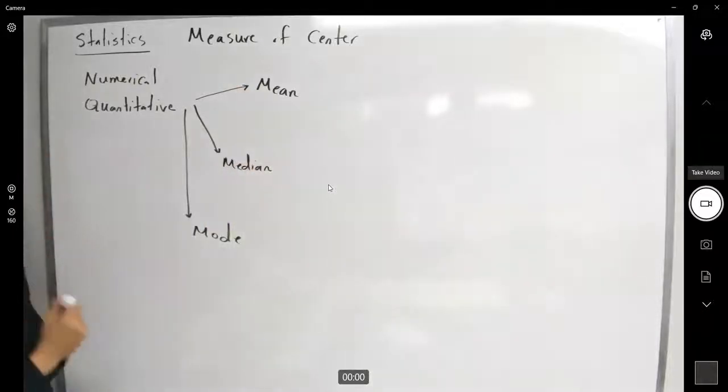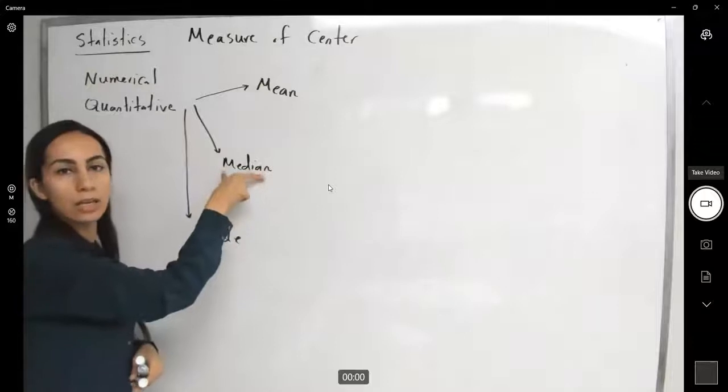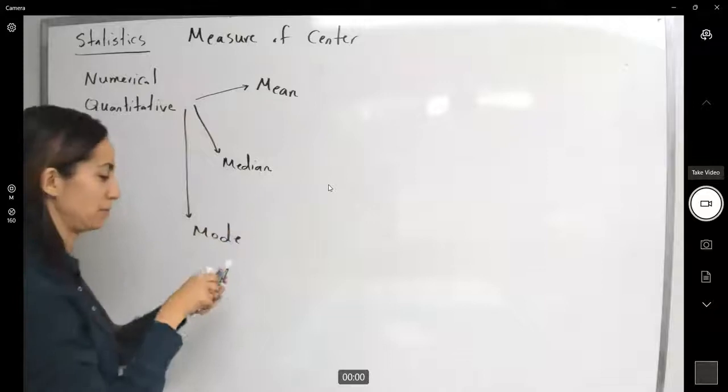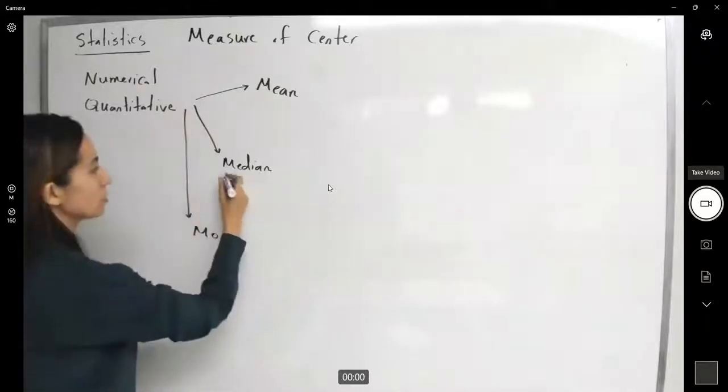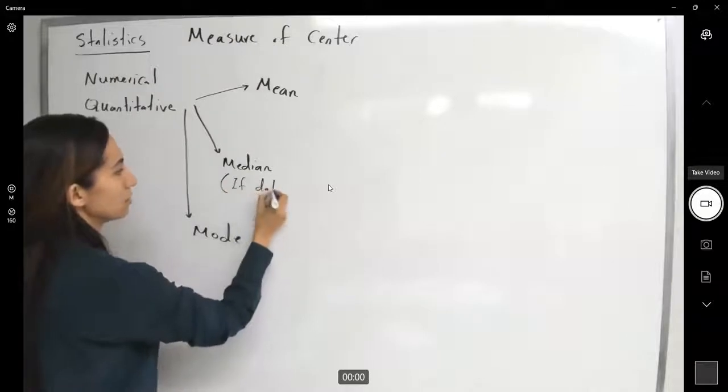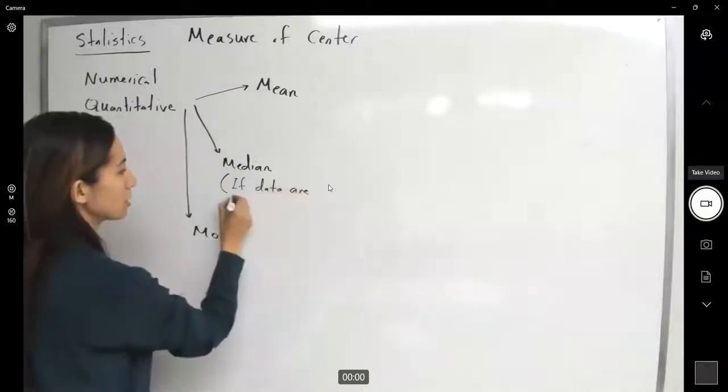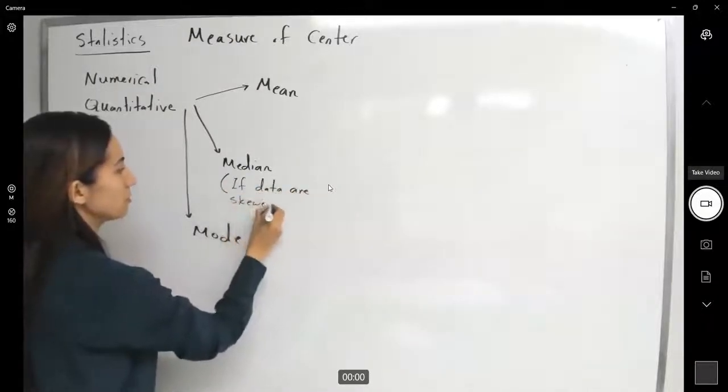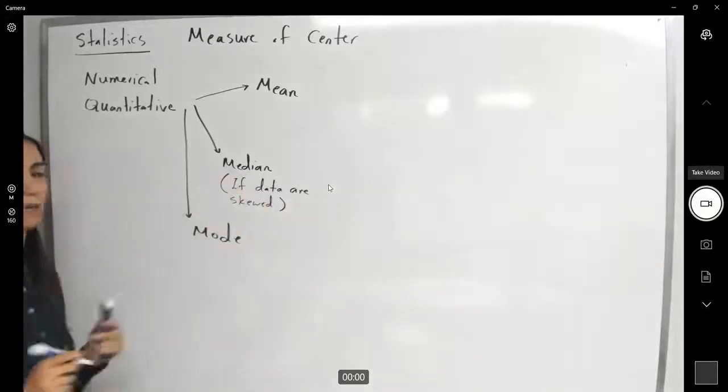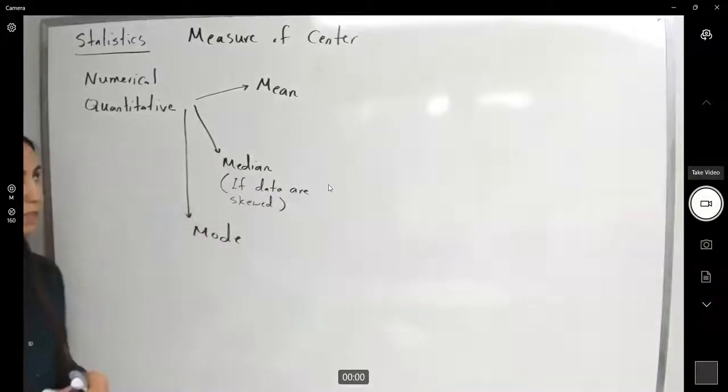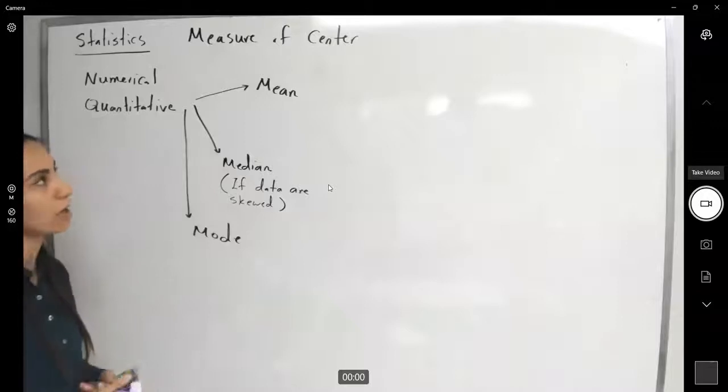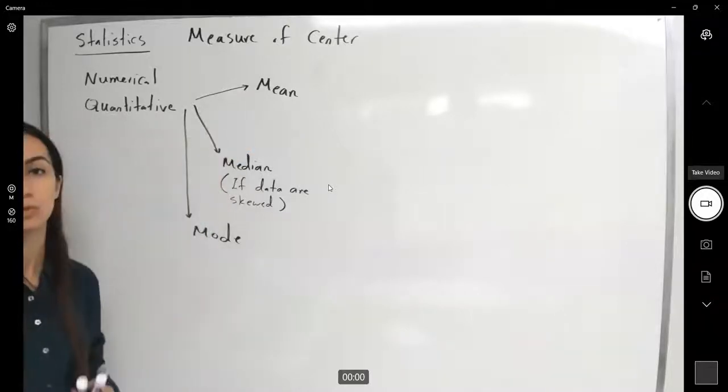If you have outlier in your collection, the center is very close to median. So if data are skewed, if you have outlier in your collection, median is a good representative. If you do not have any outliers in your collection, you can always use your mean.